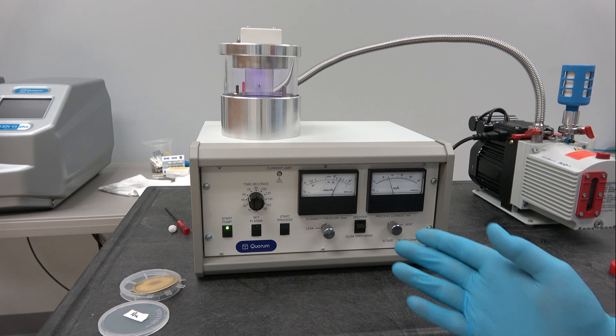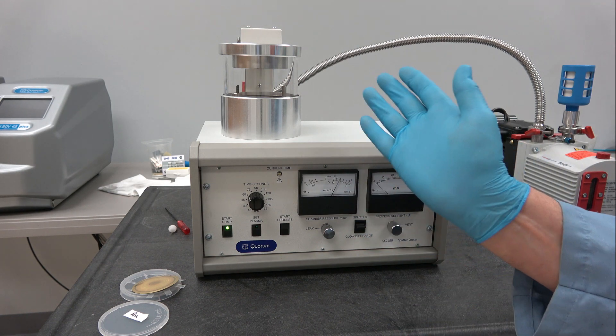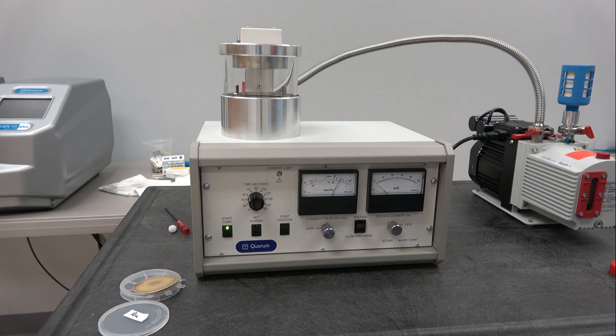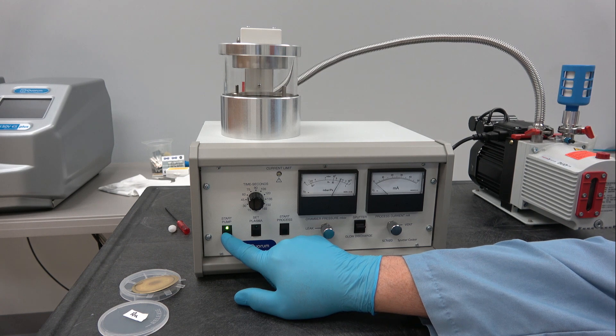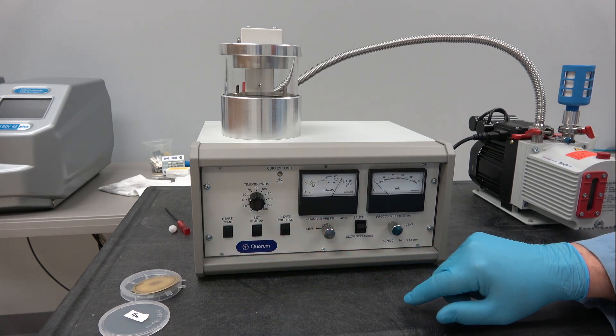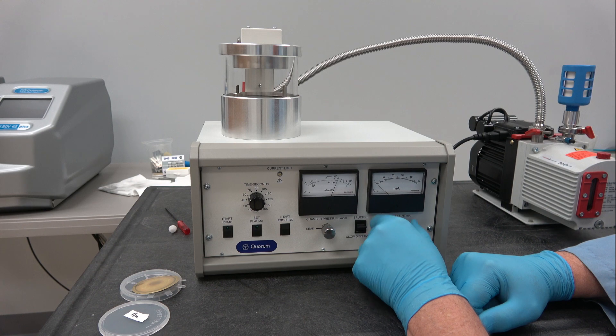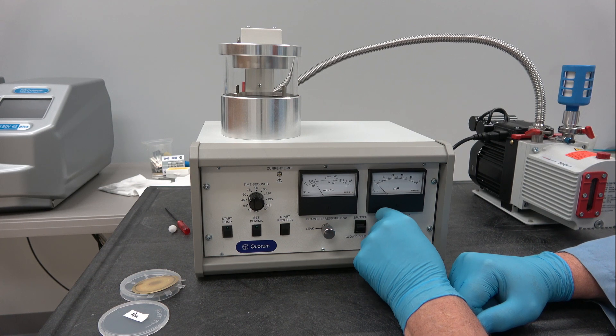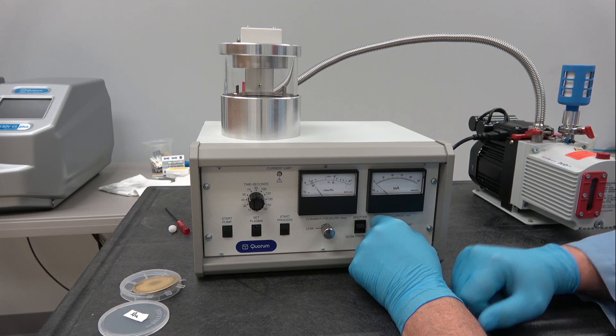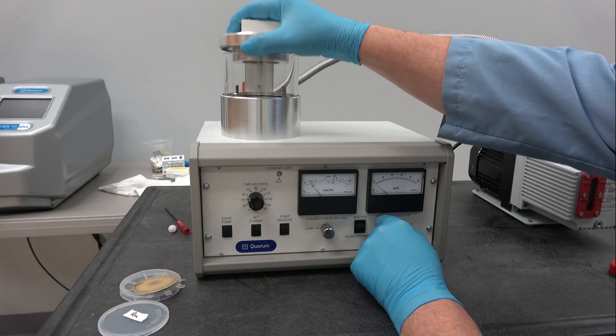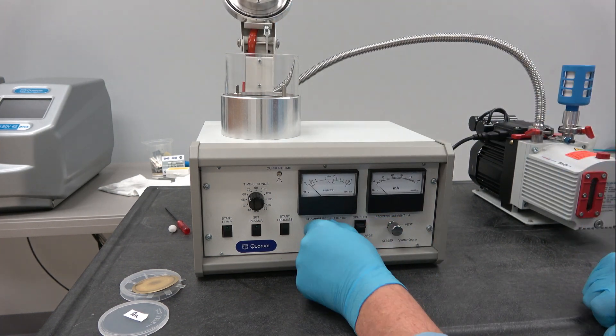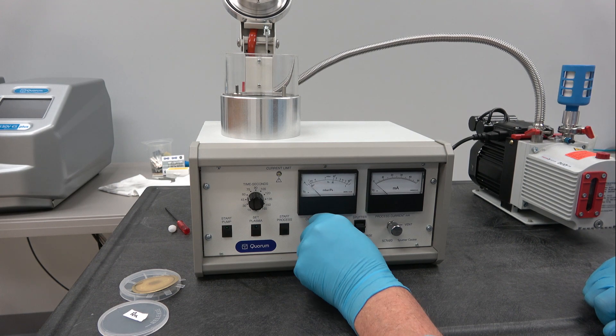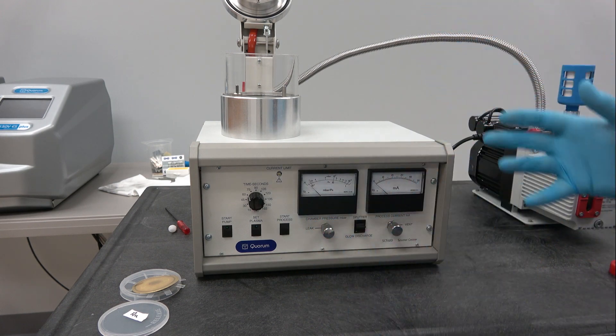So at the end of the time, the sputtering is terminated. And then you can press the start pump button and open the vent valve. Completely vent the chamber and it opens like that. Then you gently close the leak valve, take your samples out.